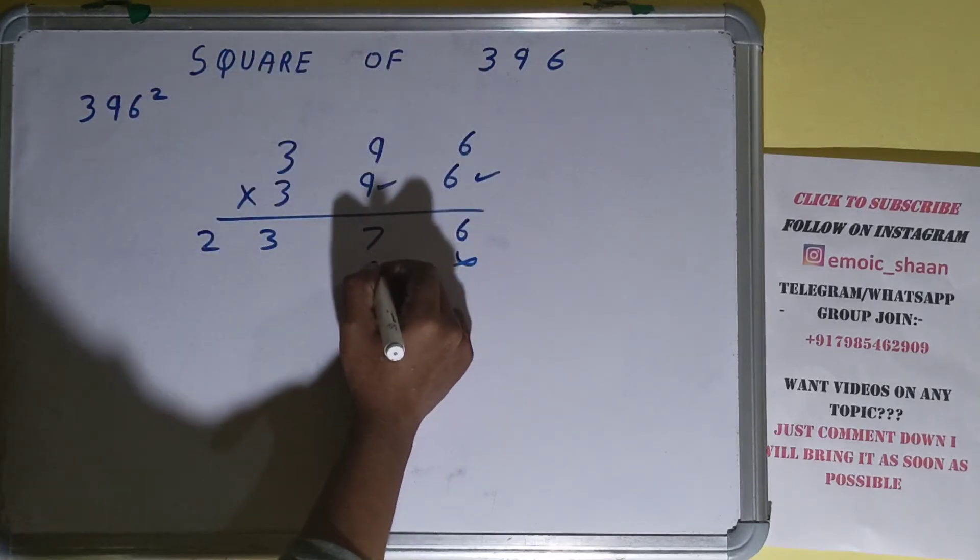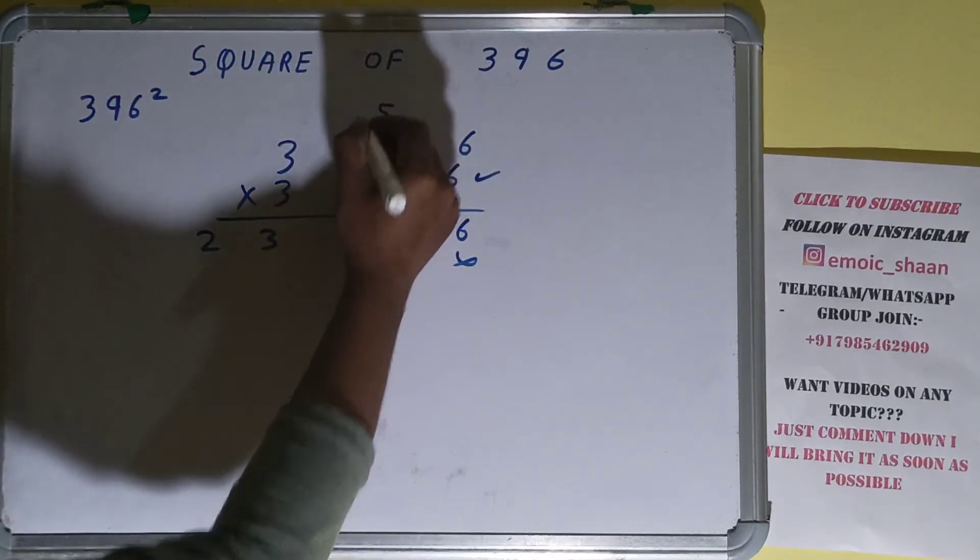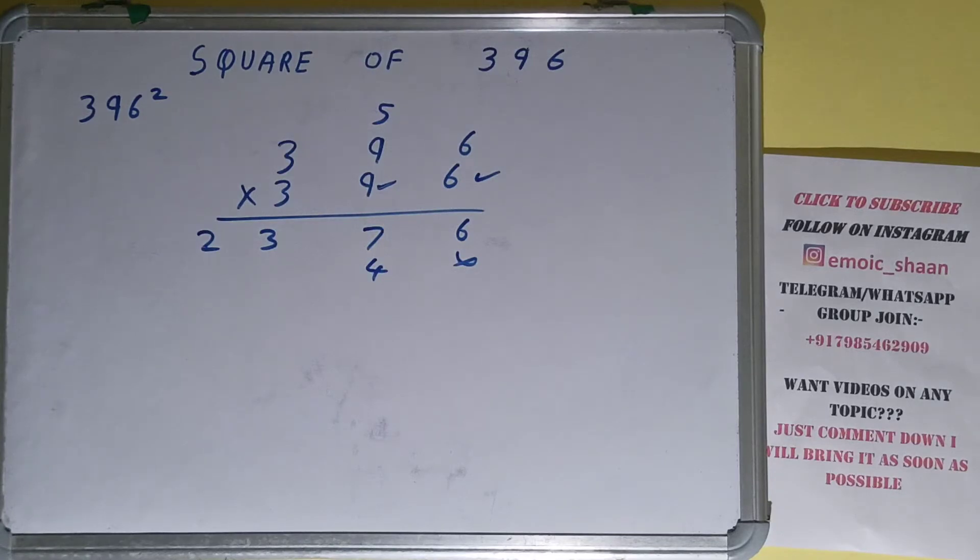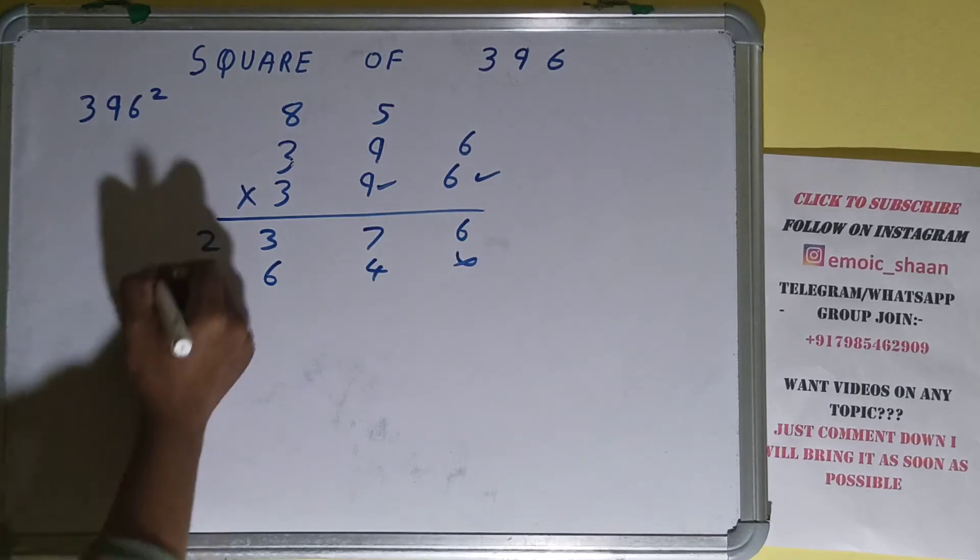Now this 9: 6 × 9 = 54, 5 carry. 9 × 9 = 81 plus 5 is 86, 8 carry. 9 × 3 = 27 plus 8 is 35.